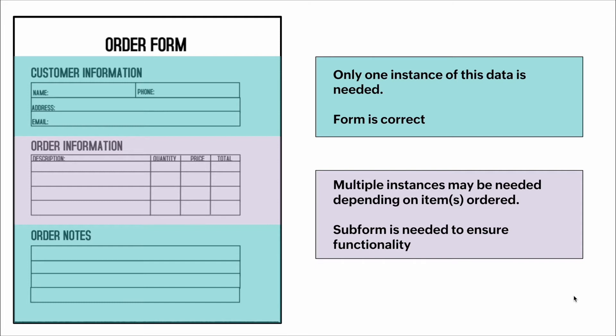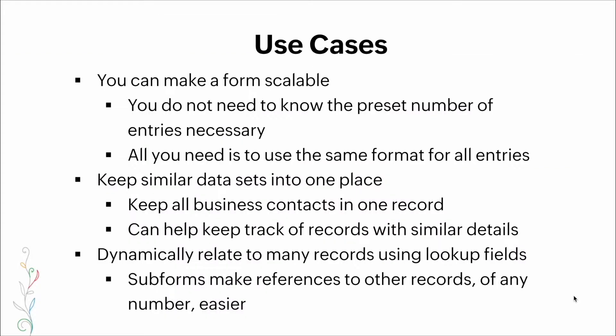But the section that requires different line items is a perfect scenario for a subform, because that section contains multiple instances that all have the same type of data. Some use cases: subforms make forms very scalable — you do not need to know the preset number of entries. They keep similar data sets in one place, keep all business contacts in one record, help track records with similar details, dynamically relate to many records using lookup fields, and make references to any number of other records much easier.